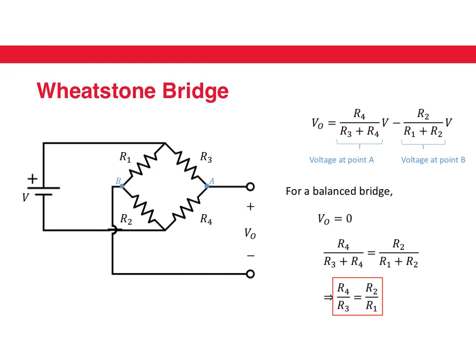The voltage at point A is given by R4 over (R3 plus R4) times V, and the voltage at point B is given by R2 over (R1 plus R2) times V. You take the difference between the two and you have the output of the bridge. For a balanced bridge — that is when the ratio R1 to R2 is the same as R3 to R4 — the output voltage is going to be zero.